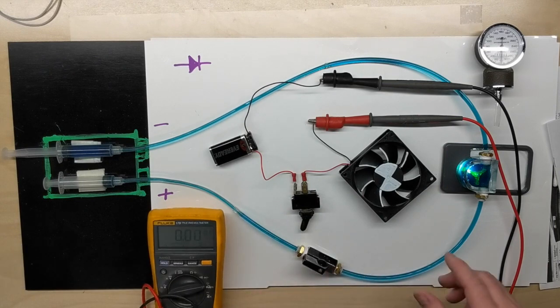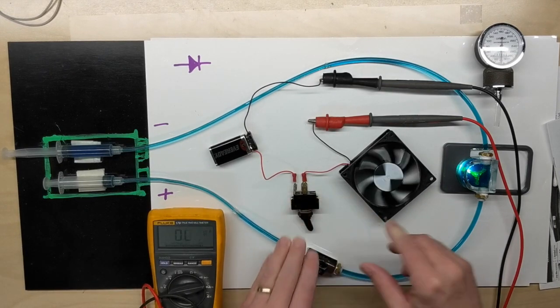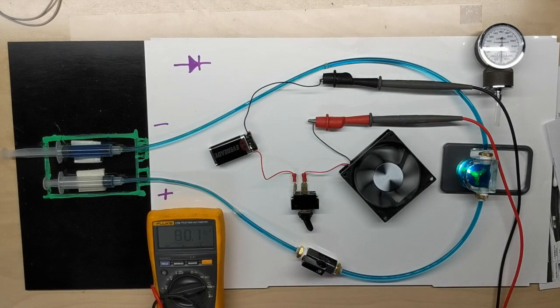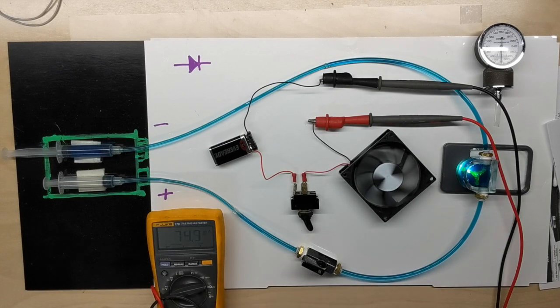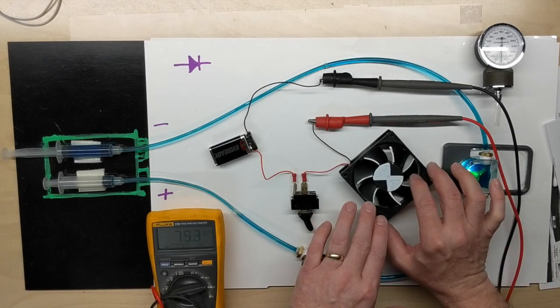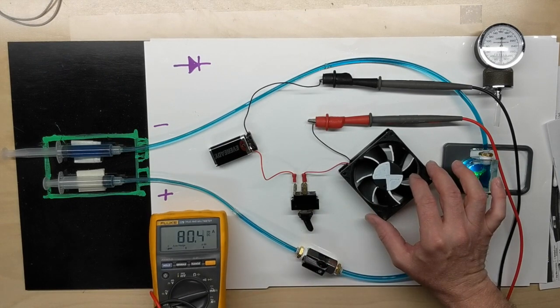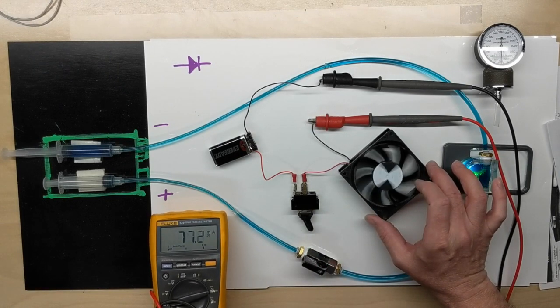You can see that screen. If we cut it on, we'll see our milliamps go up around 80, it's dropping off. And of course, if I was to stop the rotor, the fan, it'll be a little bit higher than with it running.